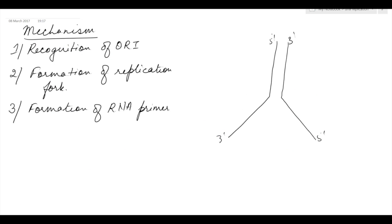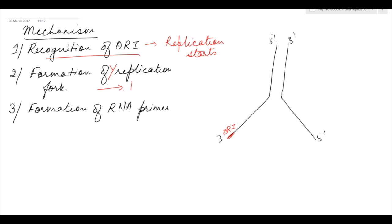Now let's come to the mechanism of DNA replication. First is recognition of the ori. Ori is a short strand of DNA from which replication starts. Next is formation of the Y-shaped replication fork, which is formed with the help of helicase and topoisomerase enzymes, as we have already discussed. After the two strands have opened, RNA primer is formed at the ori in the 5' to 3' direction.